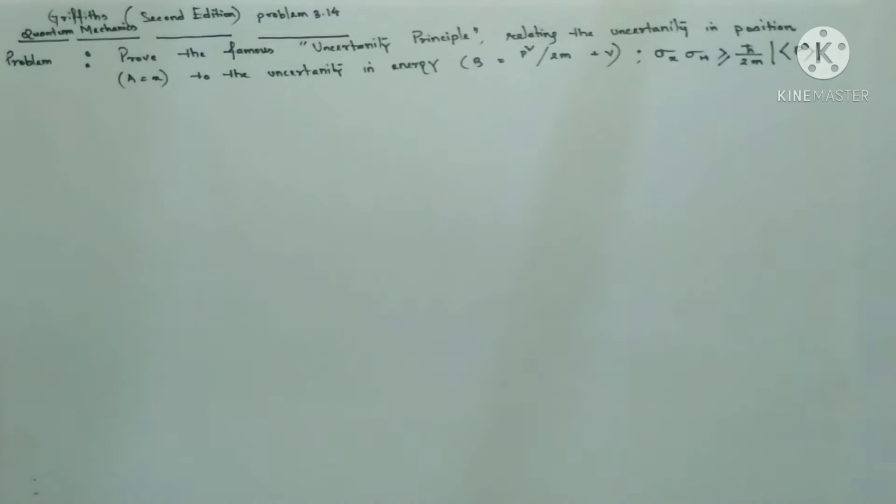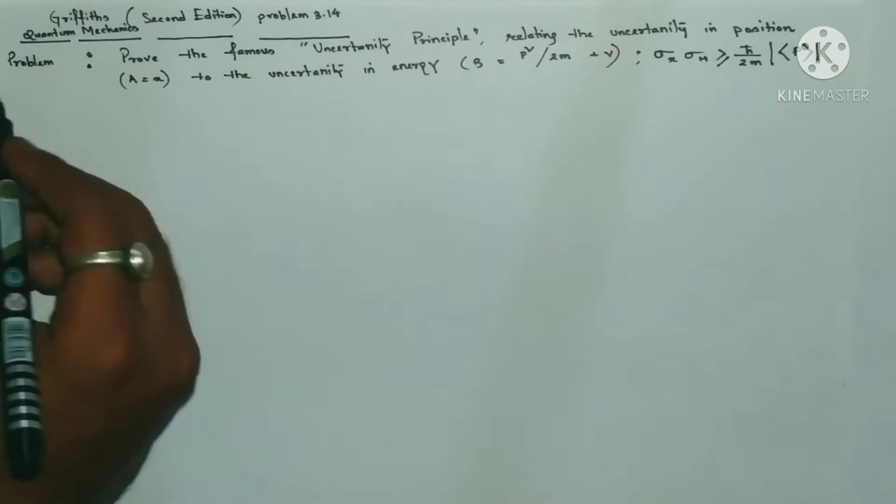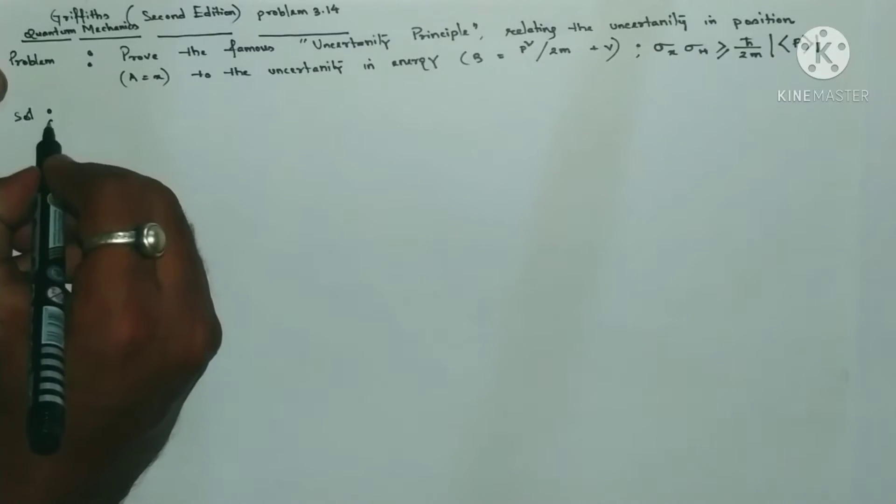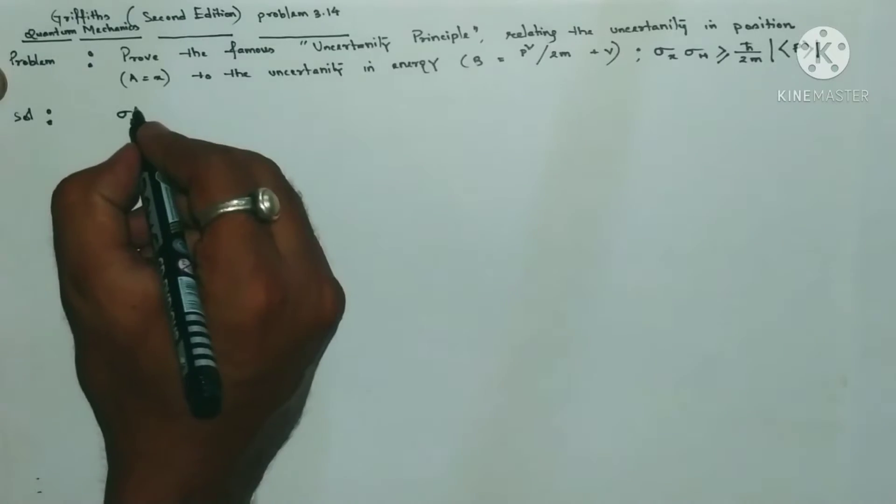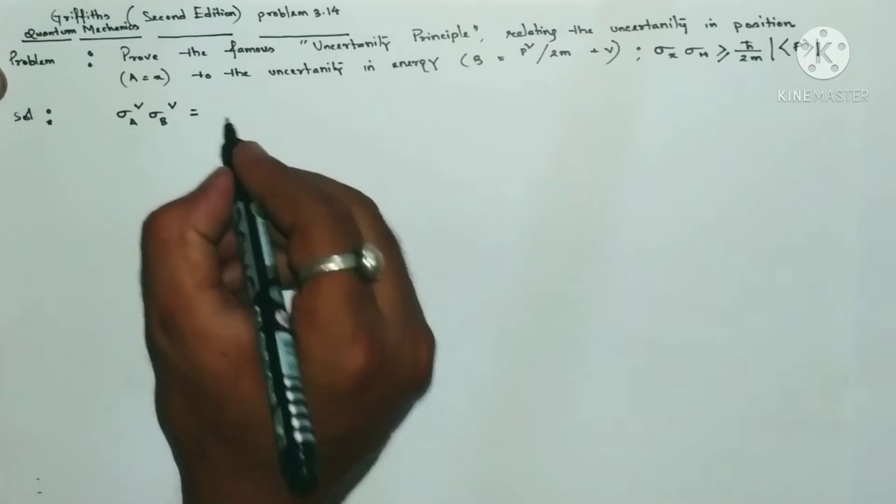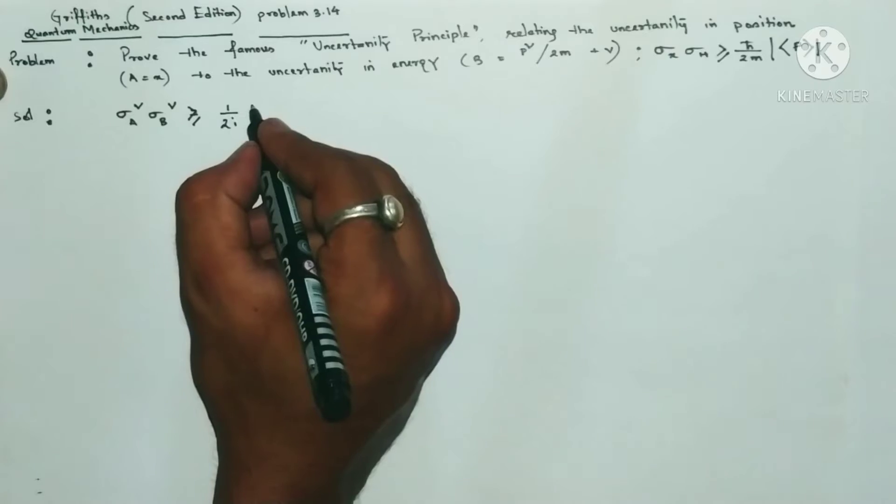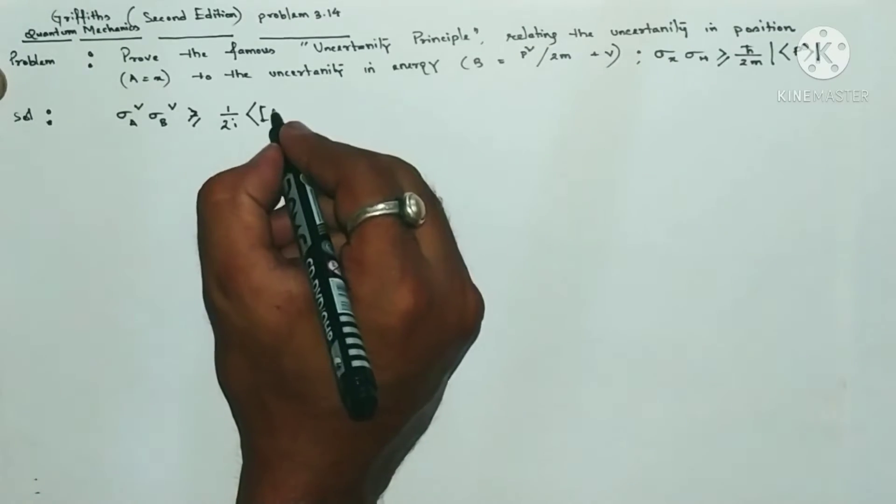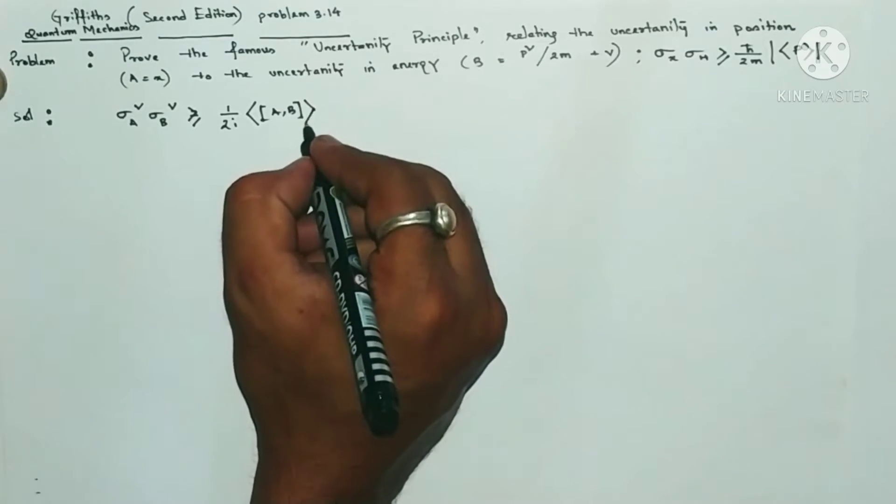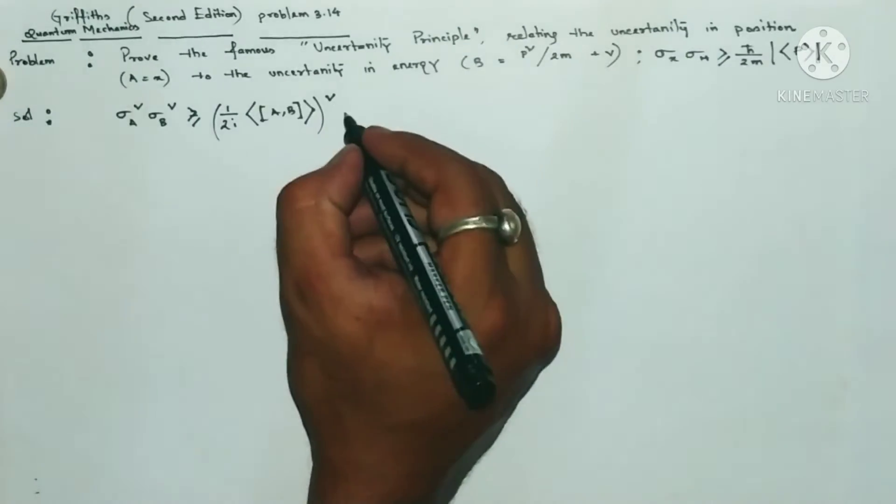To prove this, we will take the generalized uncertainty principle. The generalized uncertainty principle states that uncertainty in A squared times uncertainty in B squared is greater than or equal to one by 2i times the expectation of the commutator A comma B, whole squared.